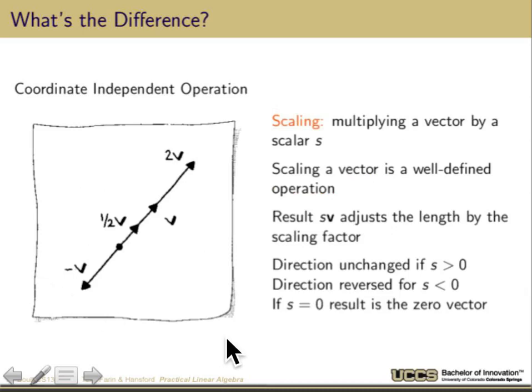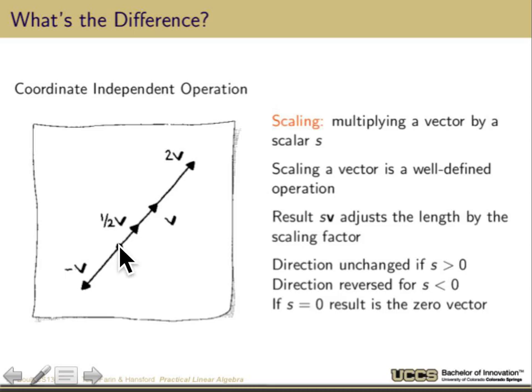Scaling is another important operation. If I scale a vector by a scalar S — so I have my vector V — multiplying by 2 gives a vector going in the same direction but twice as long. Multiplying by one-half gives the same direction, half as long. Multiplying by minus 1 gives the opposite direction. Think of the vector as: start at the tail and go this many units in that direction. An important case is if S is 0 — the result is the zero vector, which has no direction and no length.